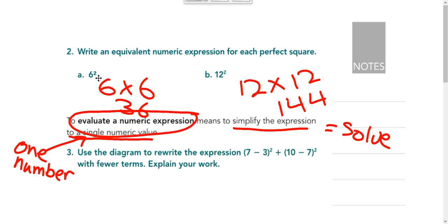Our base is 6. That tells us we're going to use 6 as a repeated factor, and we're going to repeat it two times. So 6 times 6 would be 36.